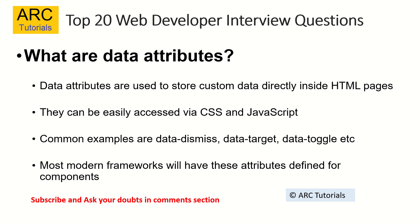What are data attributes? Data attributes are used to store custom data directly inside HTML pages. Just like any other HTML attributes, they can be easily accessed via CSS and JavaScript. Some commonly used examples are data-dismiss, data-target, data-toggle, etc. If you look at modern frameworks like Bootstrap or Material Design, they all make heavy use of data attributes.